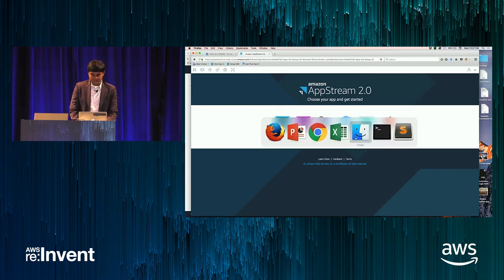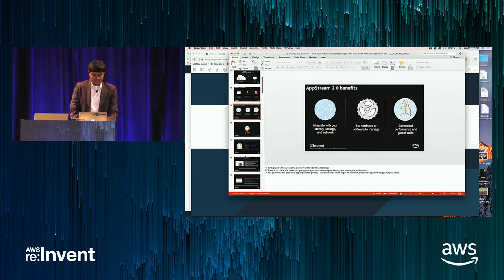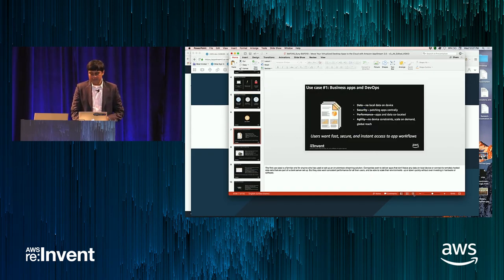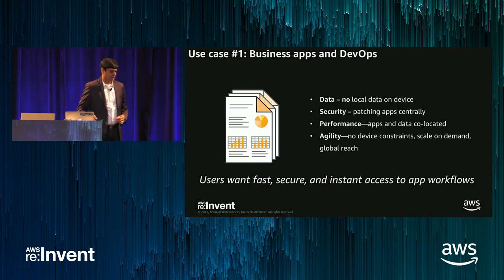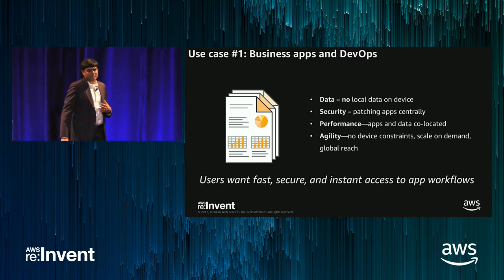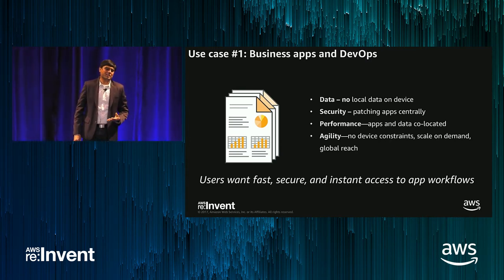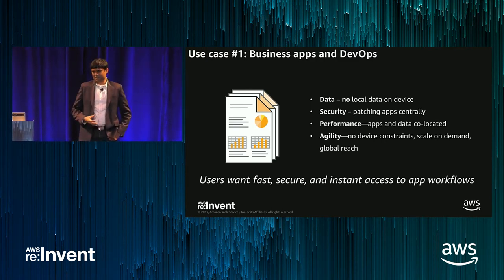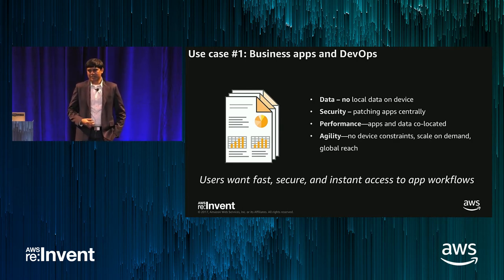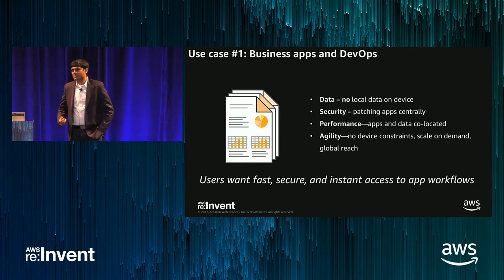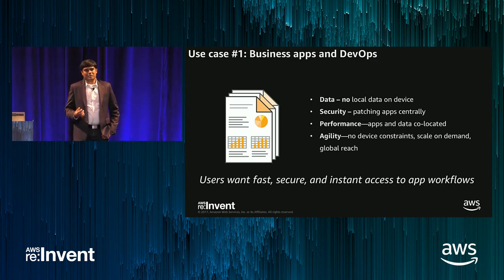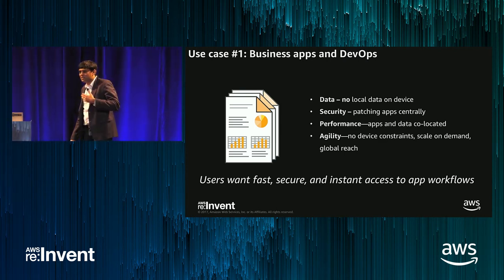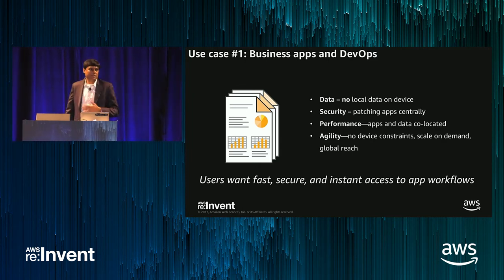Let me switch gears and talk about some of the use cases that drive AppStream. Use case number one is business applications. Folks are probably familiar with streaming use cases on-premises — the idea is to centralize data and apps, take care of patching in a single location, and not worry about updating multiple endpoints. You have the agility of not worrying about devices — you can separate what device a user has from what applications they need to use, so users always get access to the apps they need in the quickest possible way.